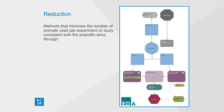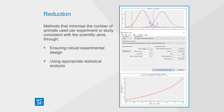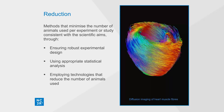Reduction is defined as methods that minimise the number of animals used per experiment or study, in a manner that is consistent with the scientific aims. It focuses on ensuring experiments provide data that are reliable and reproducible, by the use of robust experimental design and appropriate statistical analysis. Reduction also includes technologies that allow the use of fewer animals or for more information to be gained from the same number of animals. It is important to ensure that this reduction in numbers does not have a detrimental impact on the welfare of the animals used.